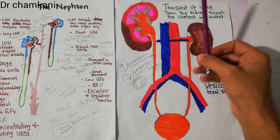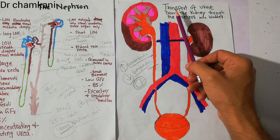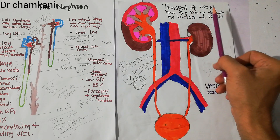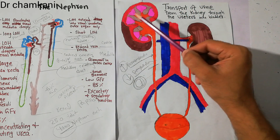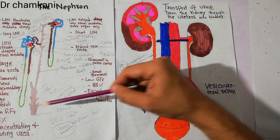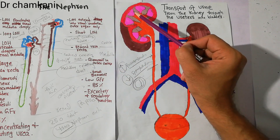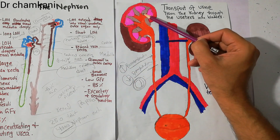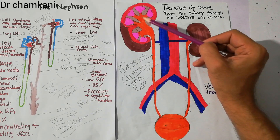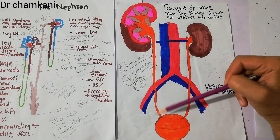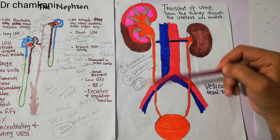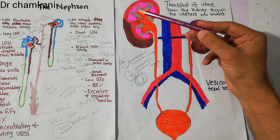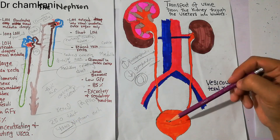In our last lecture, we discussed the transport of urine from the kidney through the ureters into the bladder. Normally, urine formation begins in the kidney at the level of nephrons, then passes through the renal papilla into the minor calices, major calices, renal pelvis, then the ureter, and into the urinary bladder.